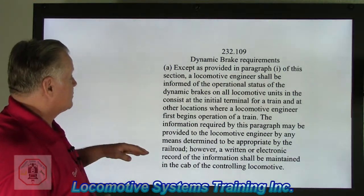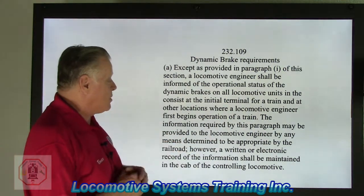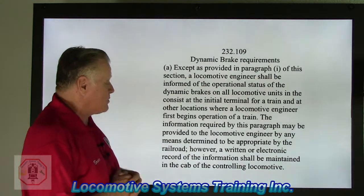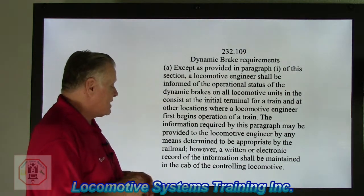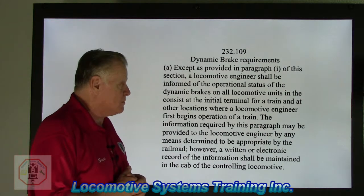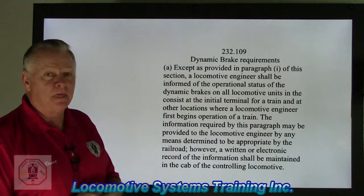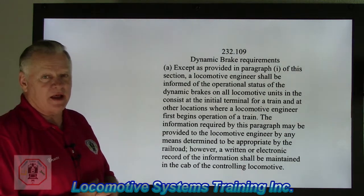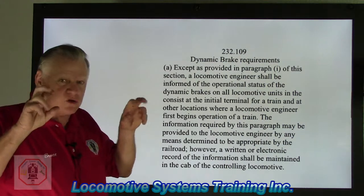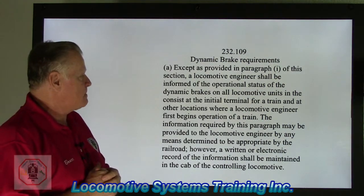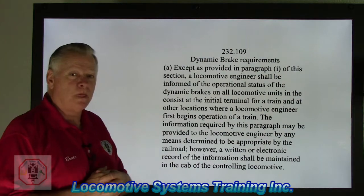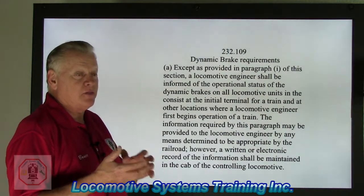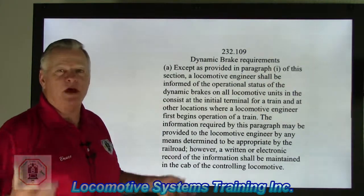The information required by this paragraph may be provided to the locomotive engineer by any means determined to be appropriate by the railroad. However, a written or electronic record of the information shall be maintained in the cab of the controlling locomotive. For example, if I have a three-unit consist, I should have three locomotives with working dynamic brakes. What if I only have two, or one?